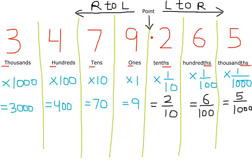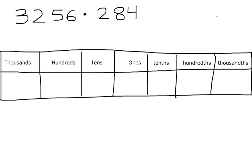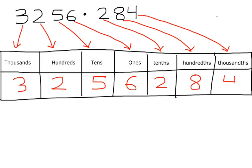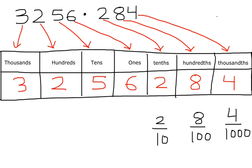Now it should be easy to make a place value chart. To make the place value chart for 3,256.284, draw a table and write the face values in the columns: 3 thousands, 2 hundreds, 5 tens, 6 ones, 2 tenths, 8 hundredths, and 4 thousandths. The number after the decimal point is actually a fraction — 2 tenths means 2/10, 8 hundredths means 8/100, and 4 thousandths means 4/1000.